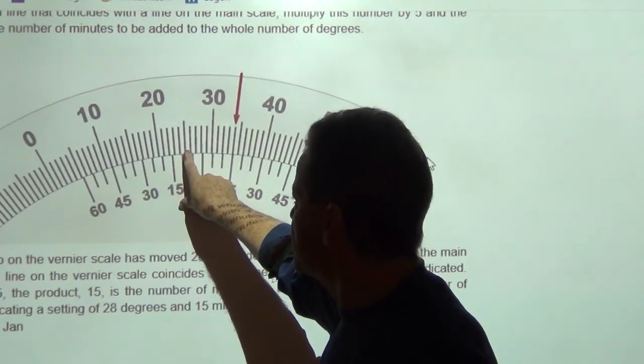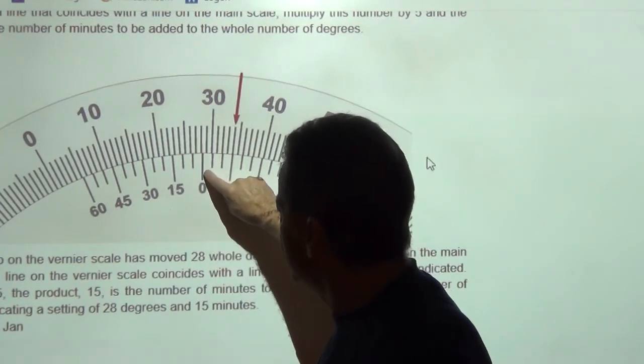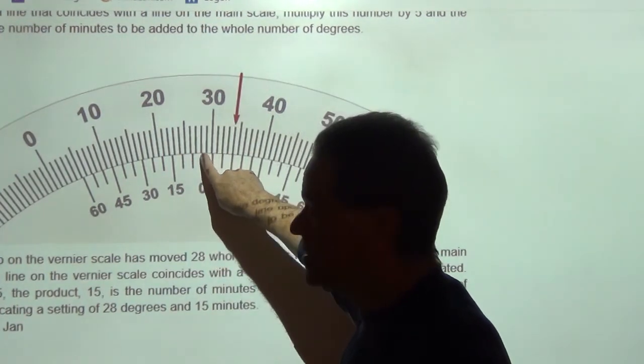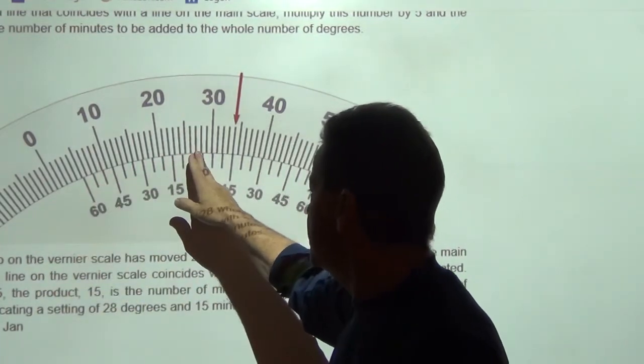And as you go along here, you would say 25 degrees, 26, 27, 28, right there. You're just, the zero is just past the 28. So, you know you have 28 whole degrees in this measurement.